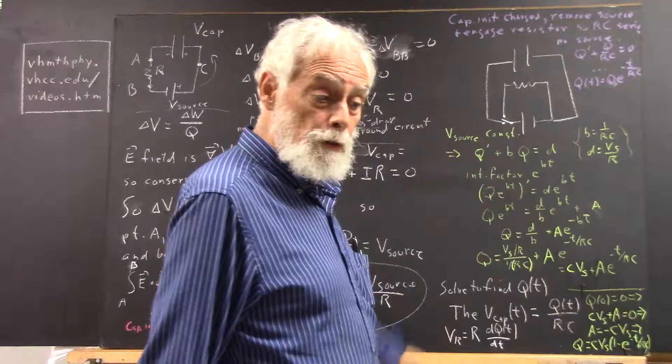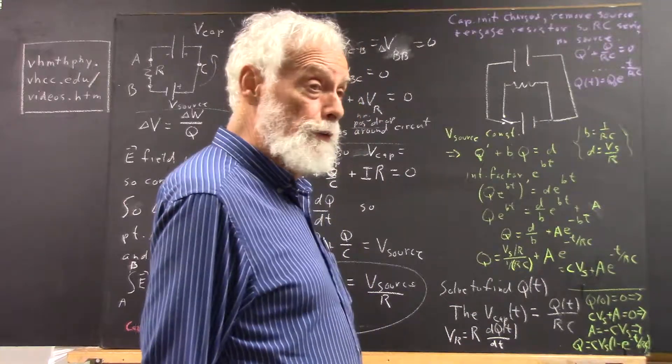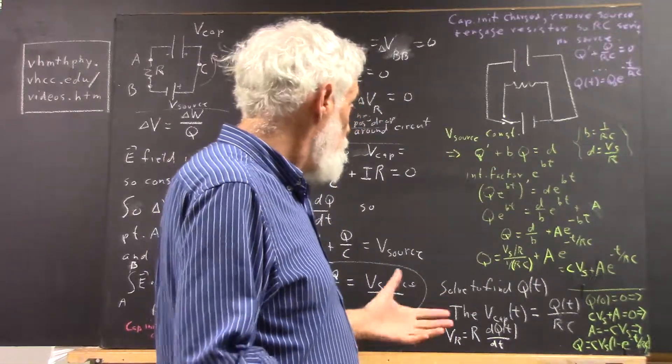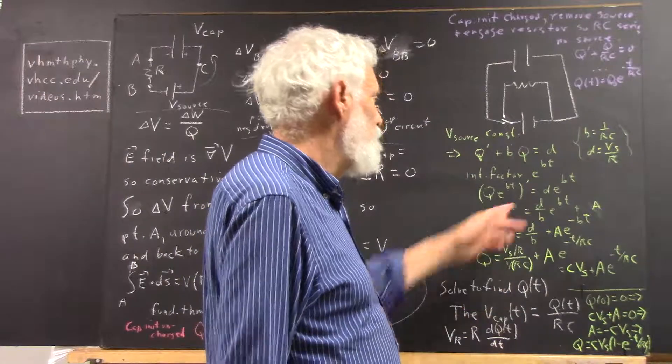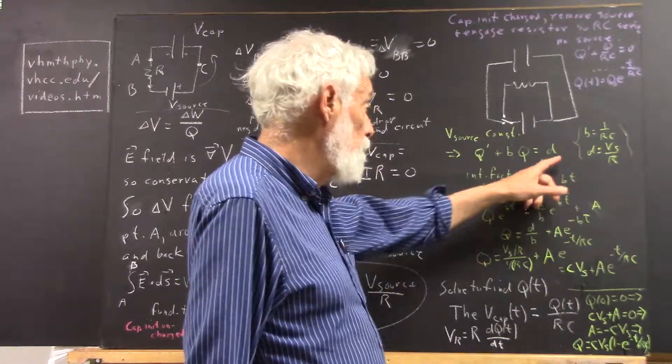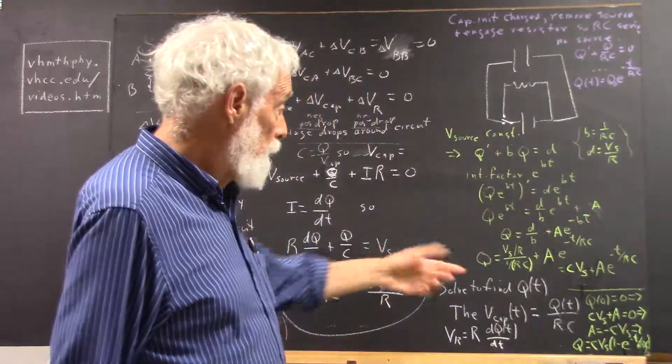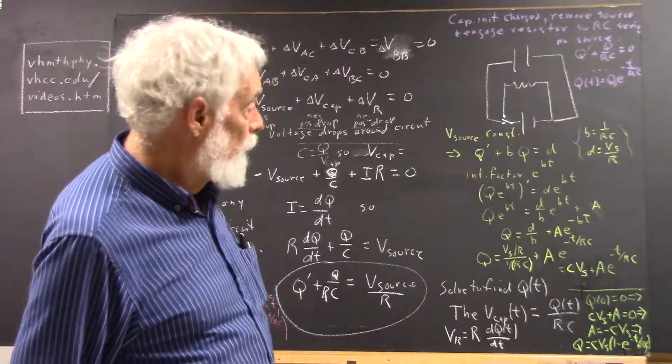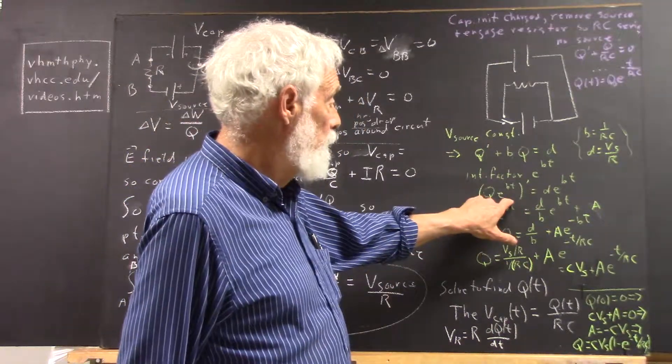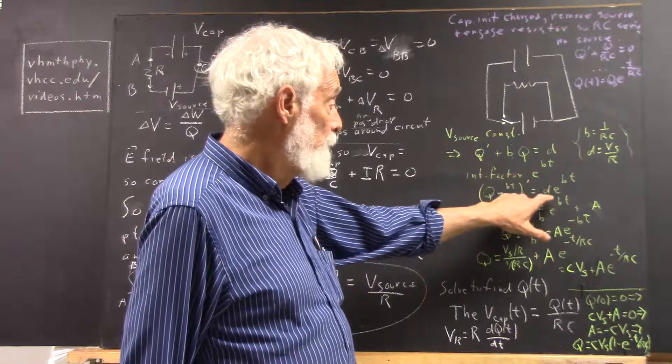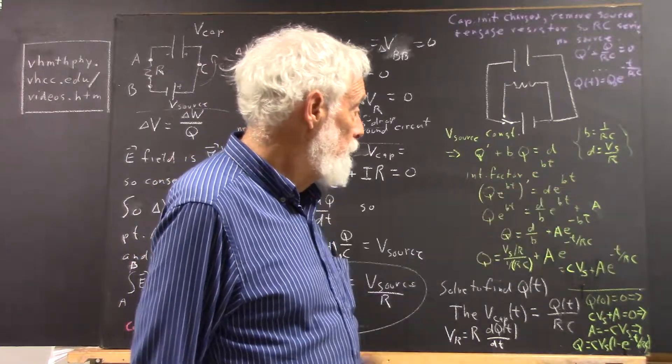This is a linear, first order equation. It's not homogeneous because of the d. There's an integrating factor, e to the bt, so that the equation becomes (q e^(bt))' = d e^(bt).